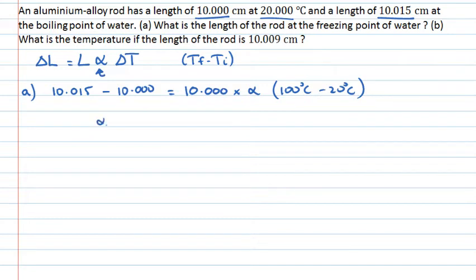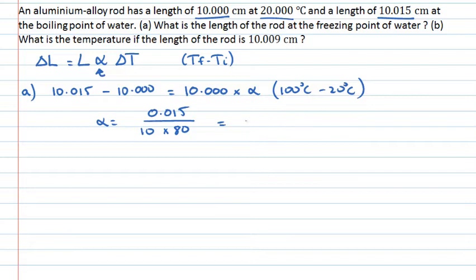Let's rearrange this and make alpha the subject. The difference in lengths is 0.015 centimetres on the left-hand side. Dividing by 10 and also by the temperature difference of 80 leaves alpha by itself. Putting this into the calculator, alpha has the numerical value of 1.875 × 10⁻⁵ per degree Celsius. That's the linear coefficient of expansion.